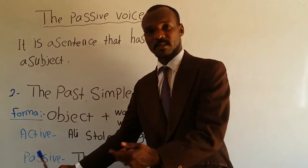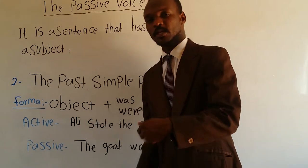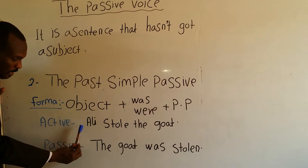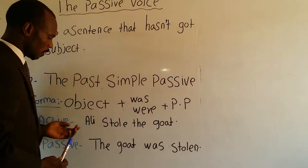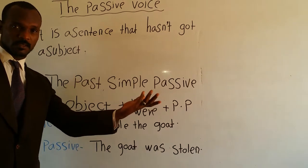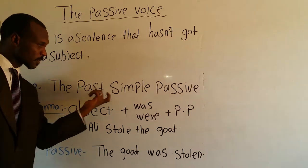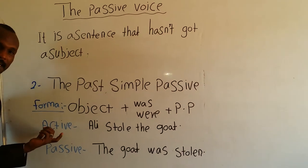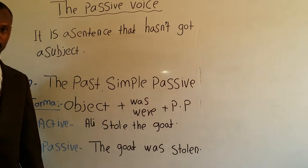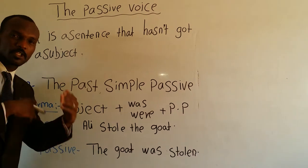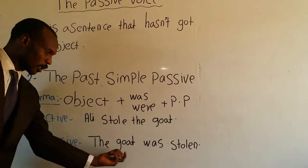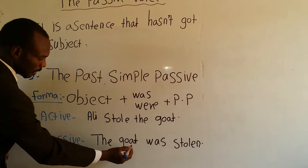For example, let us see the active sentences, and we change the active sentences into the passive voice. So right now we have active sentences: 'Ali stole the goat.' If we focus on these sentences, we find these sentences — it's in the past, because here we said past simple passive.